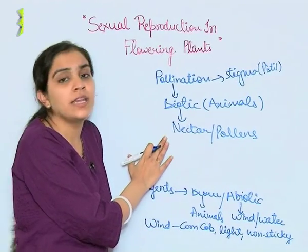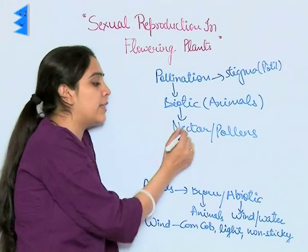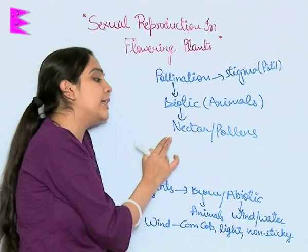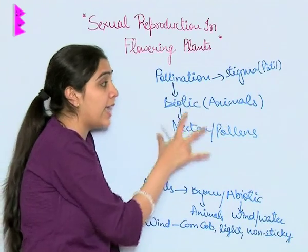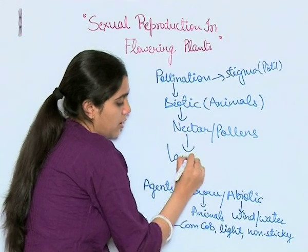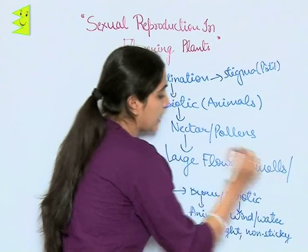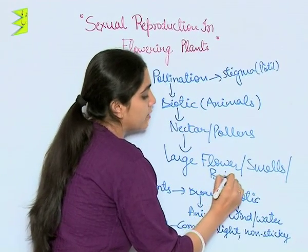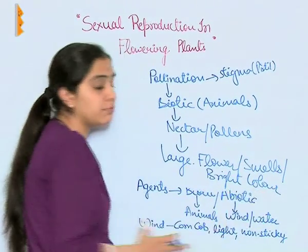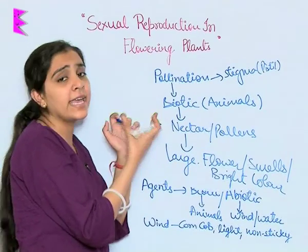We have all tasted honey. Honey is nothing but nectar sucked out by honeybees, through which certain chemical processes occur and honey is formed. So pollination through biotic means occurs when animals seek nectar and pollens. To attract animals, plants pollinated through biotic means have large flowers, bright colors, and pleasant smells — these are the means to attract animals toward the plants.